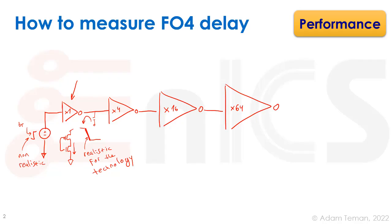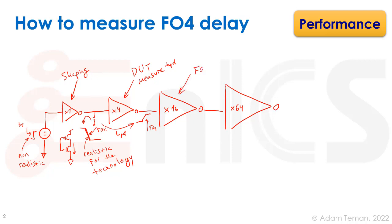Going back to the picture: the first inverter is for shaping the rise/fall time. The second inverter is the DUT — we measure the actual TPD on it, from when its input reaches 50% to when its output reaches 50%. That difference is our TPD. The third inverter is the fan-out-4 load; looking into it, we see four times the capacitance of the DUT gate.